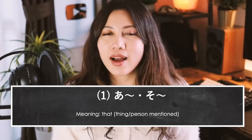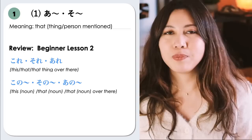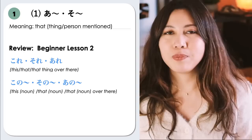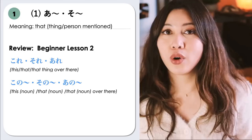Our first grammar point is the prefix A/So/Ko, which is used for demonstrative pronouns. A demonstrative pronoun basically means it, they, that, she, or he. If we want to refer to a noun that has been previously mentioned, we use a demonstrative pronoun. In Japanese, these are words such as are, sore, kore, which we've all learned before from a beginner lesson.